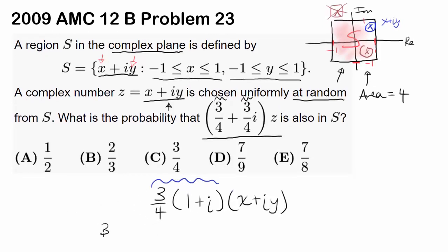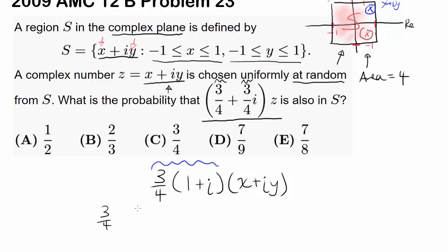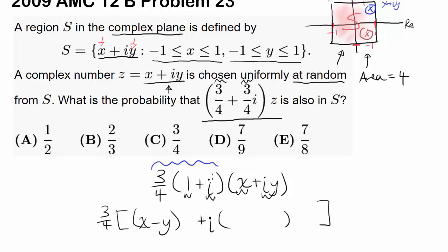Let's multiply this out. We have (3/4) times: 1 times x gives x; i times iy gives negative y (since i squared is negative 1); and the imaginary terms give ix plus iy. So the result is (3/4) times (x minus y) plus i times (x plus y).